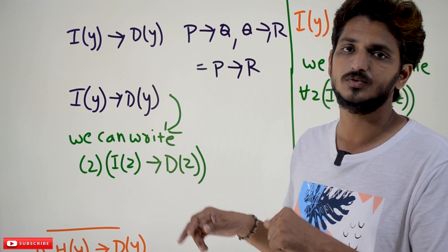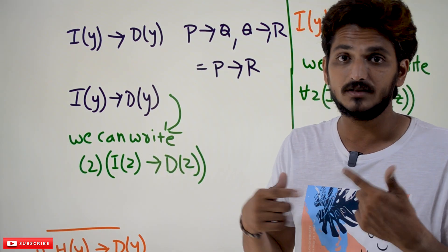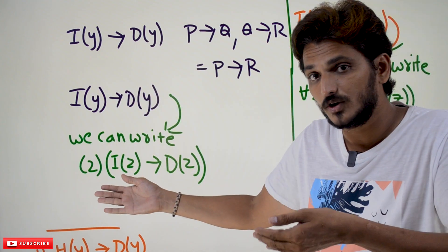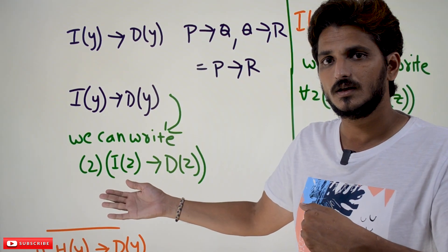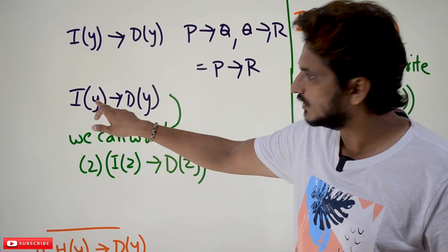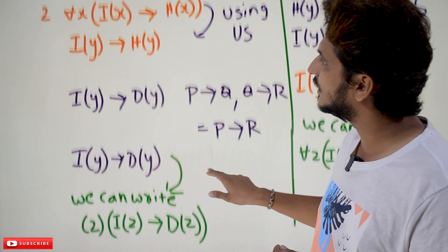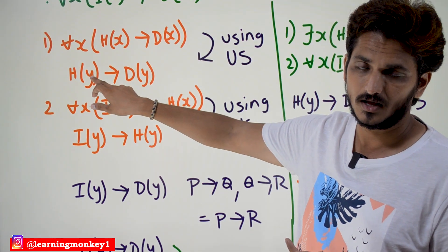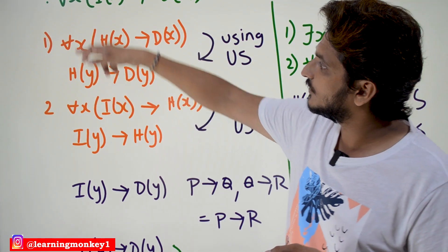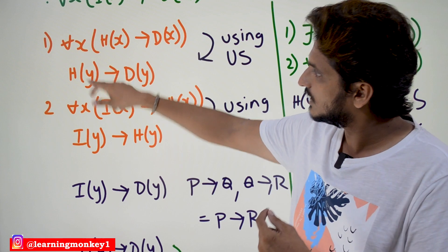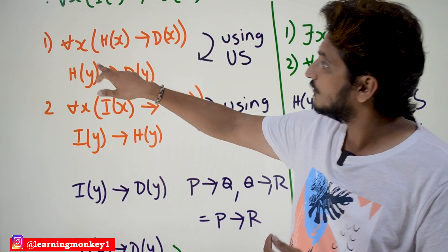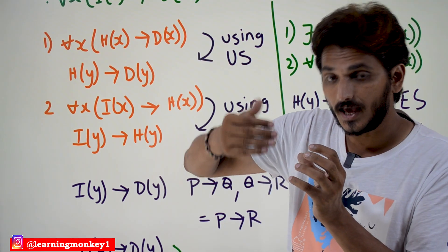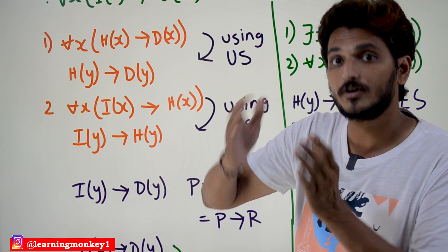Why can we write this here? From a single subject, how are we going to conclude this is applicable for all subjects? Because this variable y is a free variable in our previous derivation. This y came from — where did this free variable come from? It came from 'for all x.'